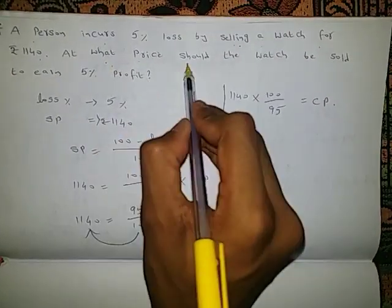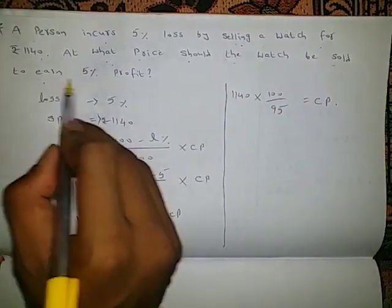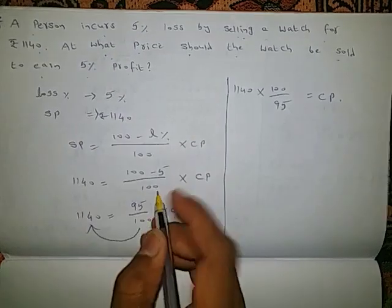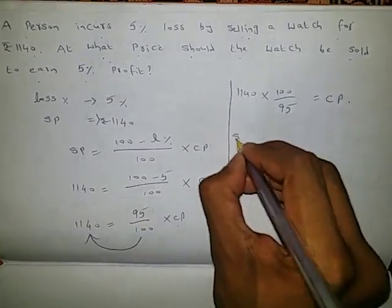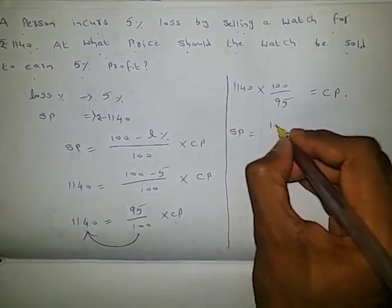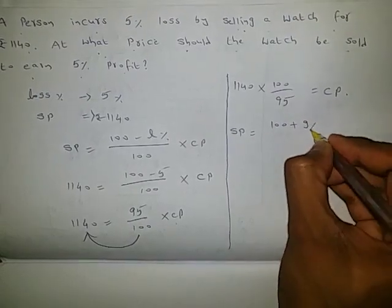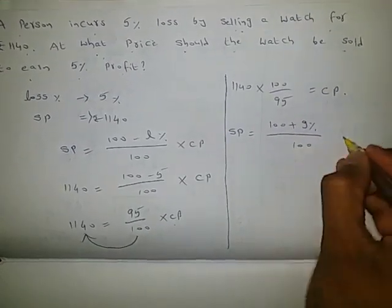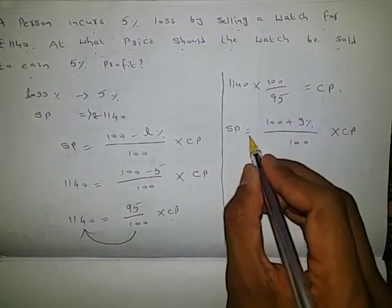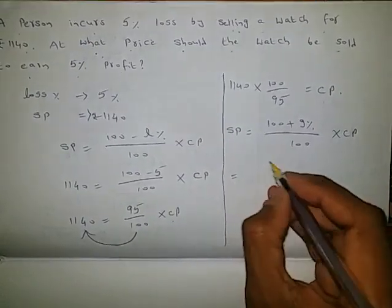Next, at what price should the watch be sold to earn 5% profit? Selling price equals 100 plus gain percentage by 100, into cost price. Now, in this case, we need to find out the selling price.